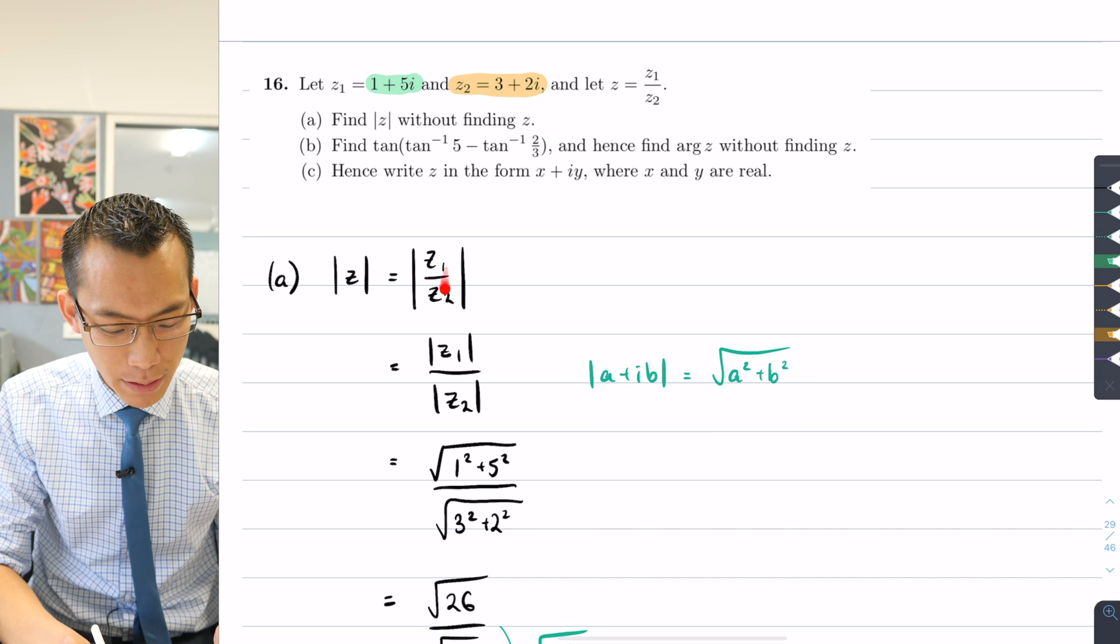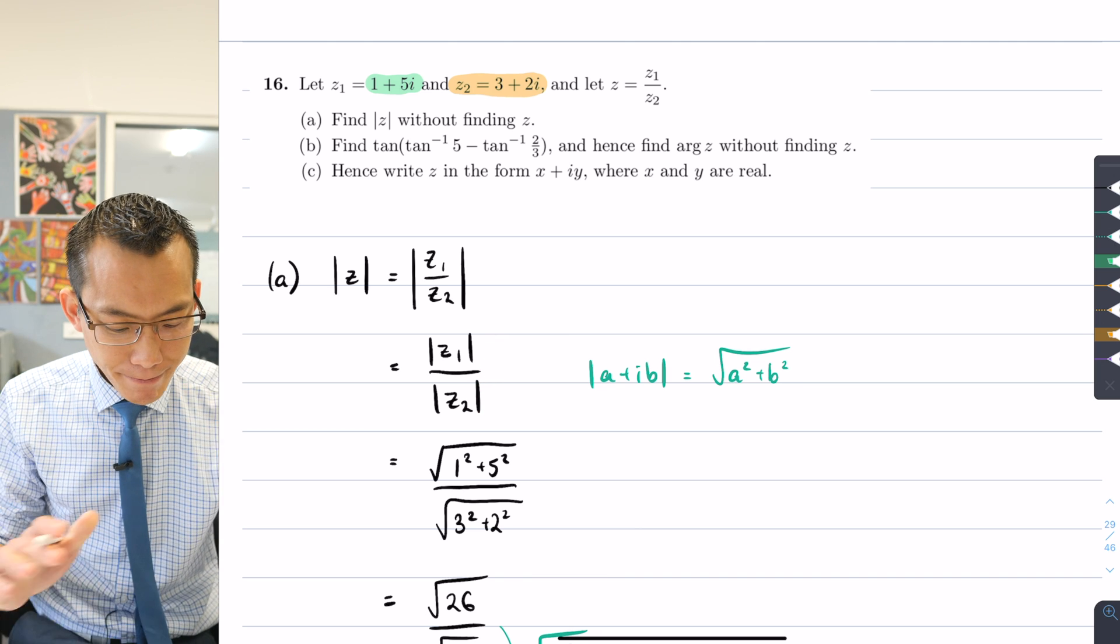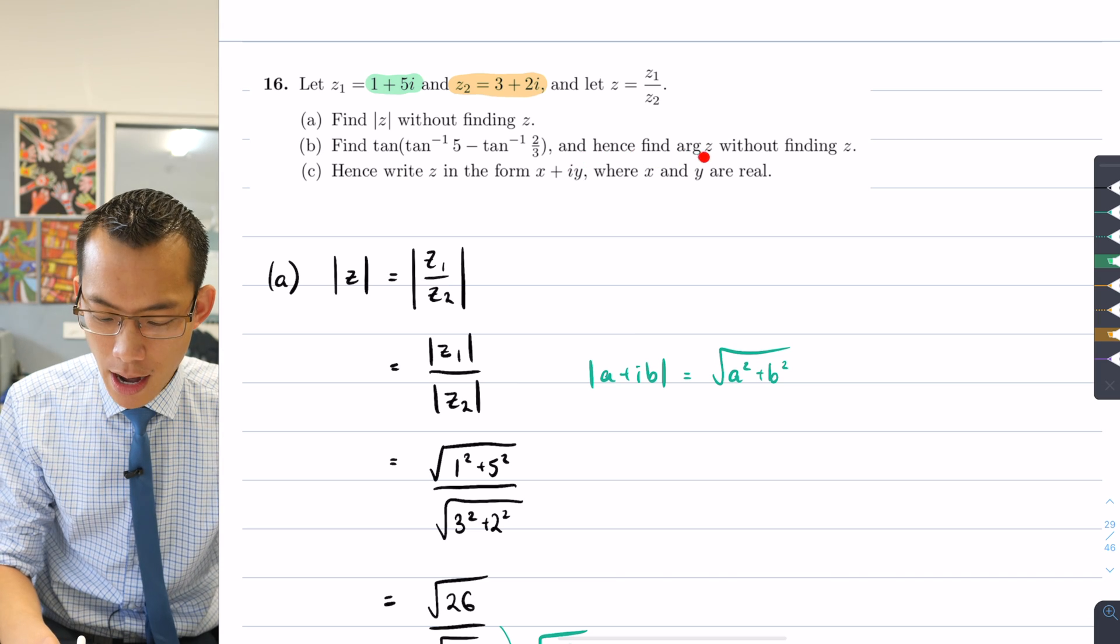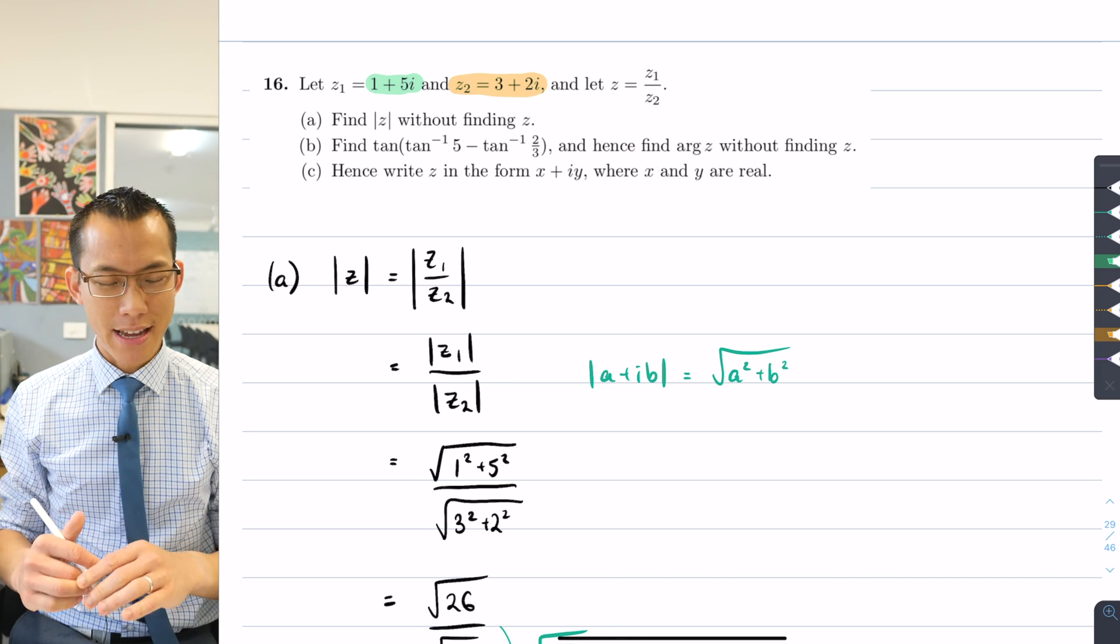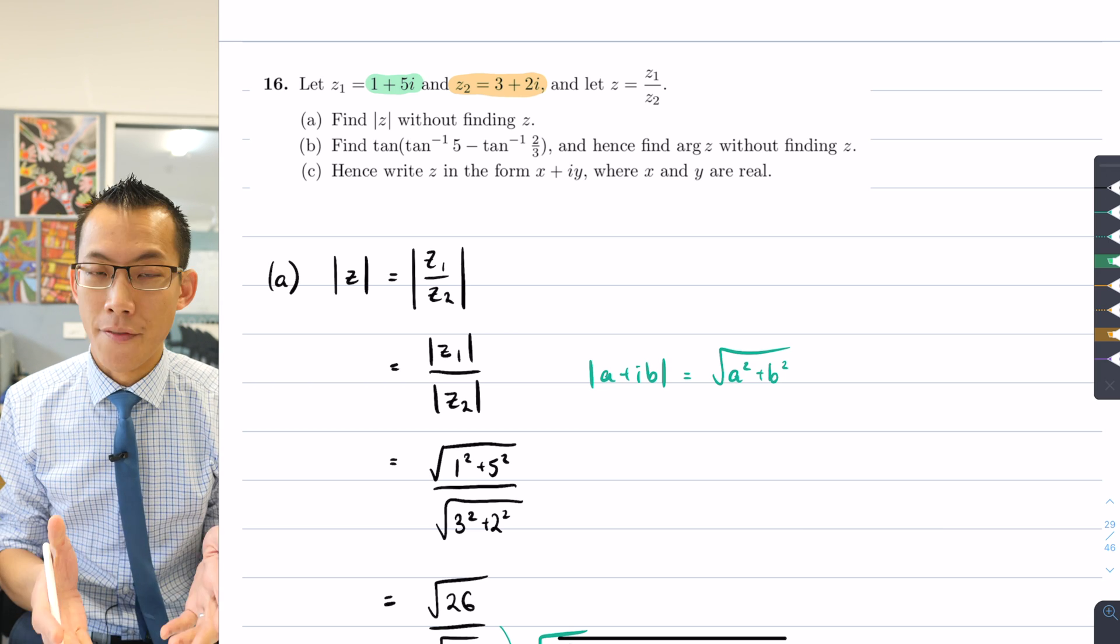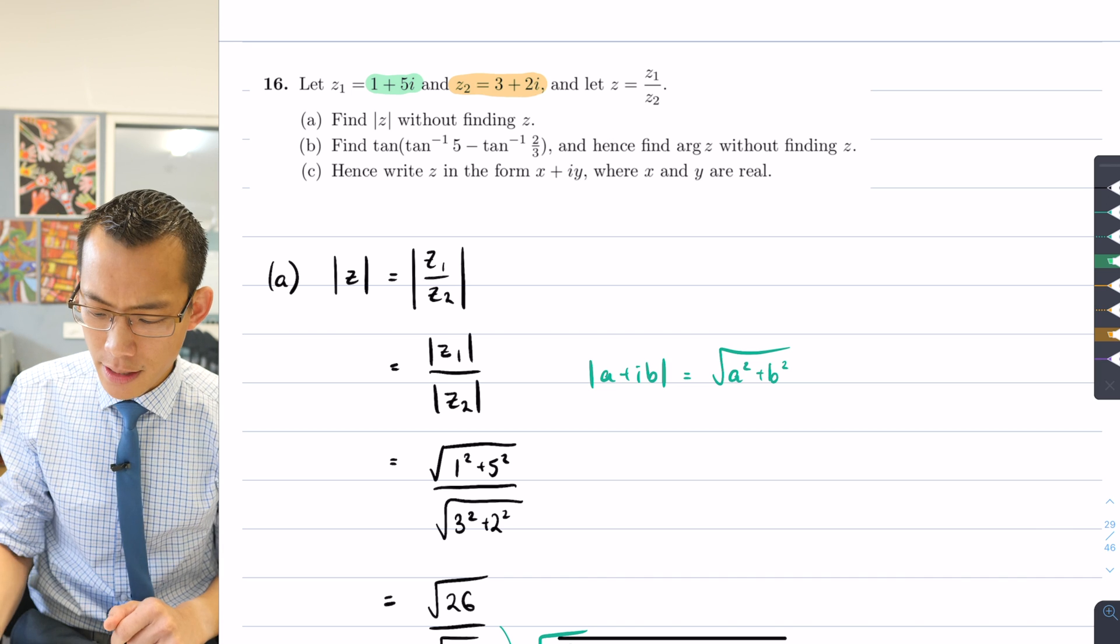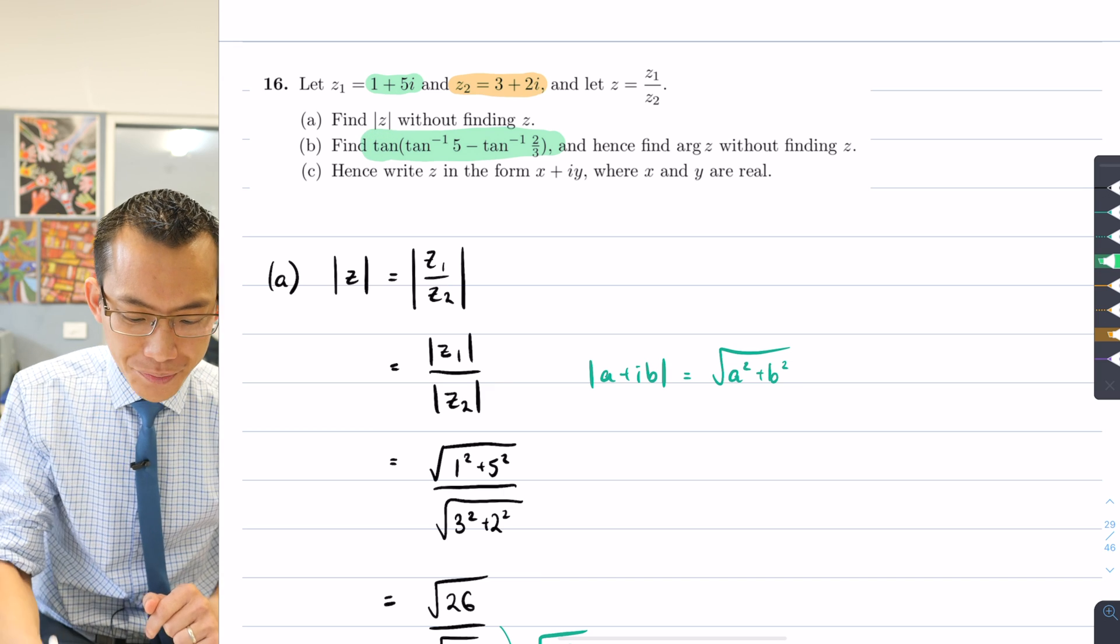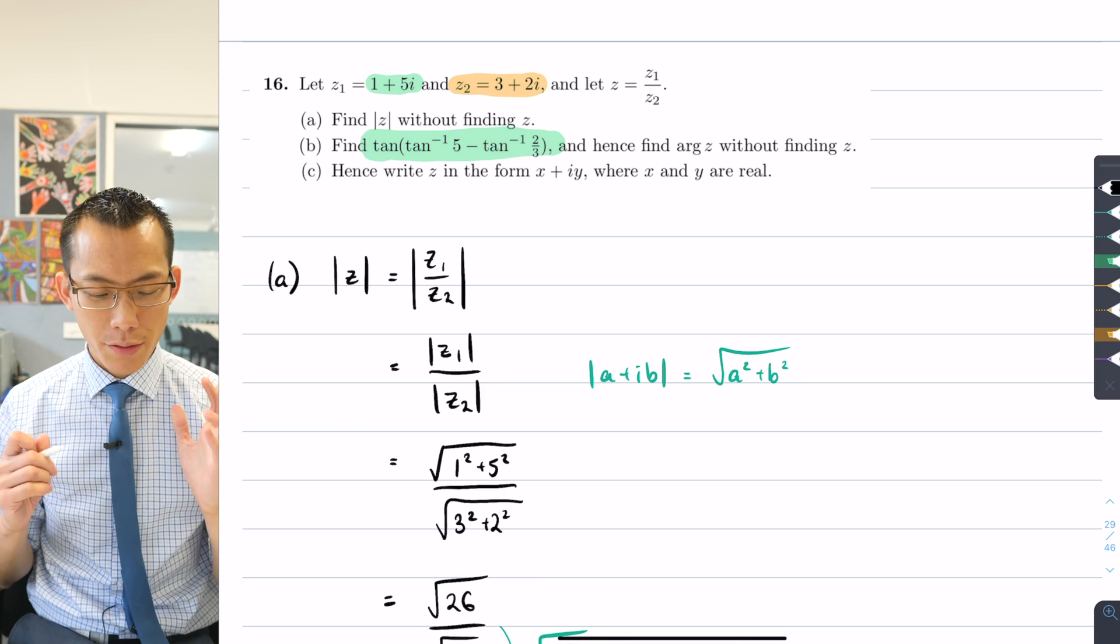All right, so I'm done, that's part a. I have found the modulus without finding where the actual number is. Part b: find this thing here and hence find arg z without finding z. All right, so we need to take a bit of a run-up to understand what this question is asking and why. It's very important to know where this expression came from.